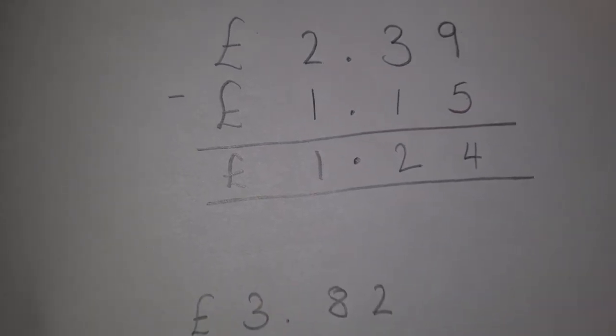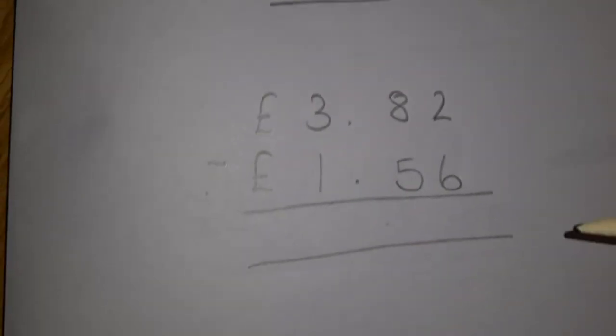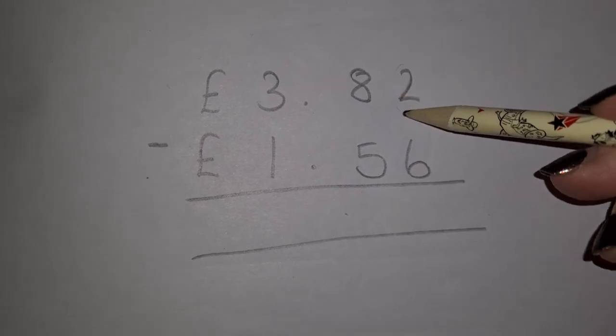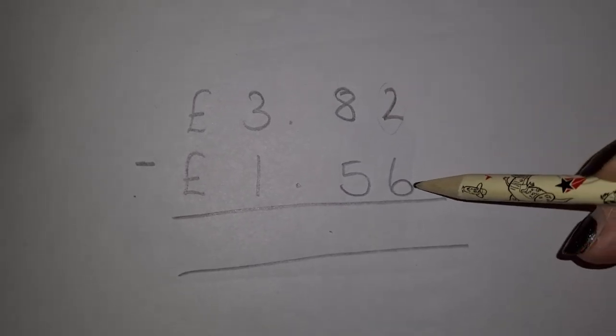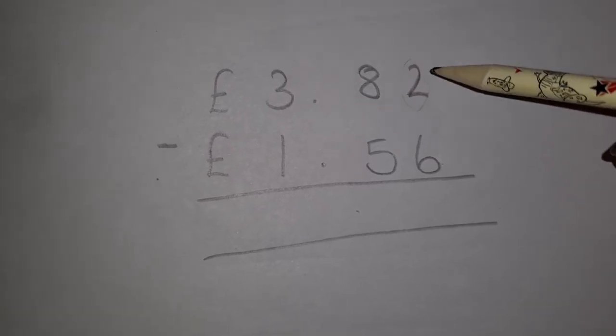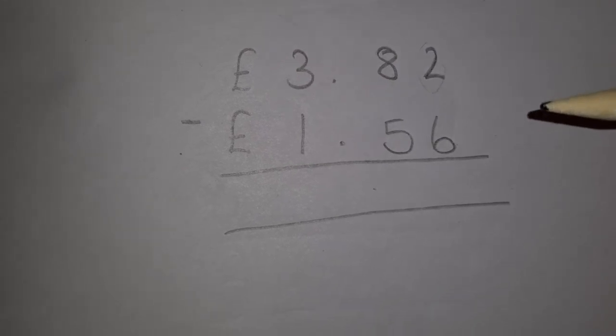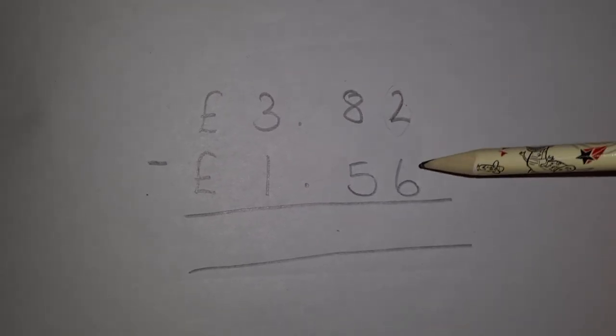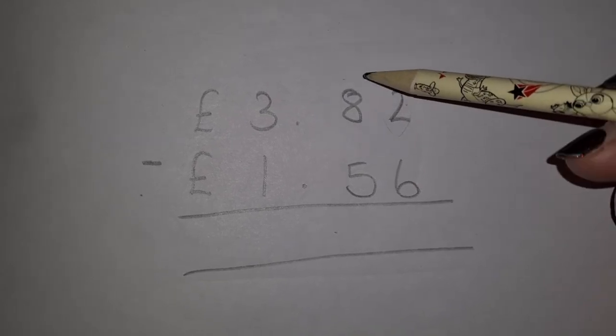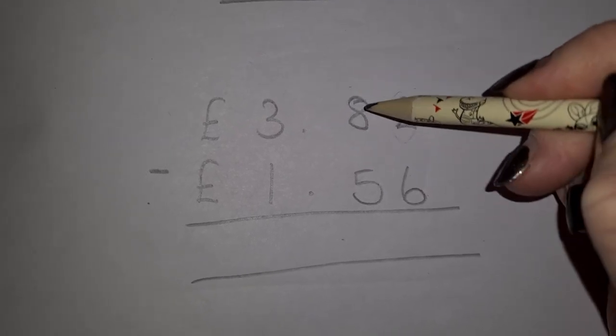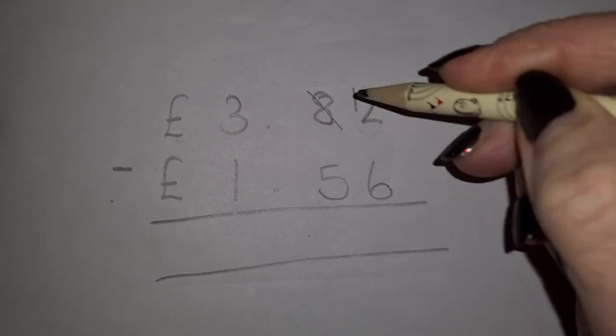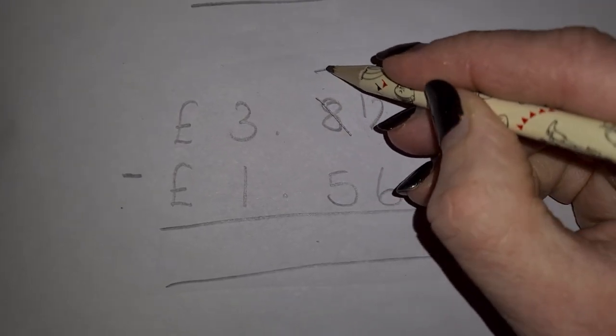It gets a little bit trickier when you have the number at the top smaller than the number at the bottom. Remember when we used column subtraction in class, we said go to next door. So 2 is smaller than 6, so I know I need to go next door to the 8, and I'm going to take 1 from the 8 and move that over to my ones column. That 8 then becomes a 7.